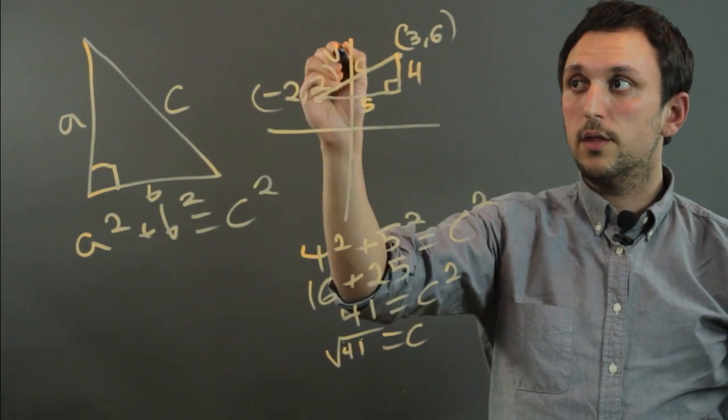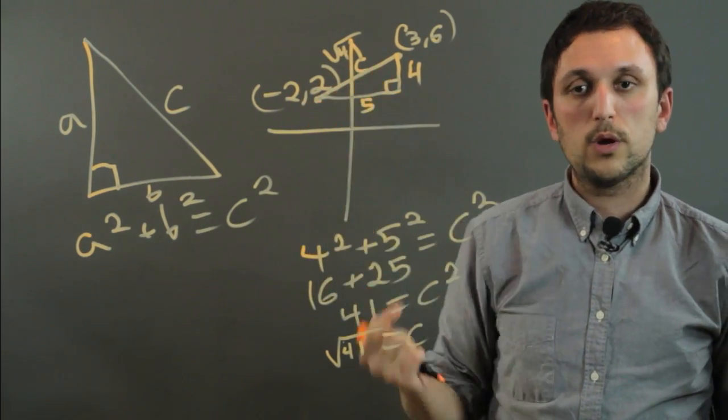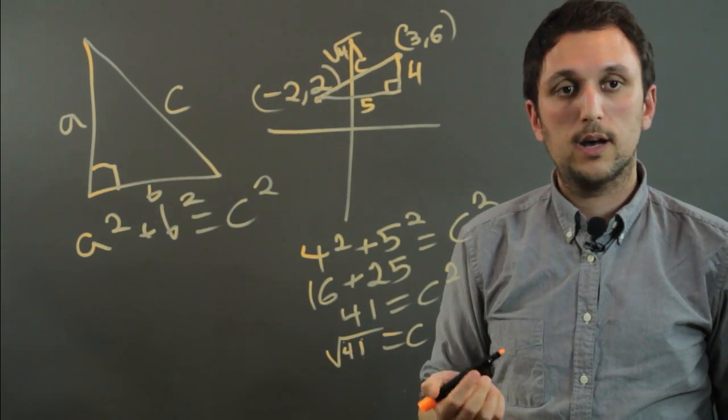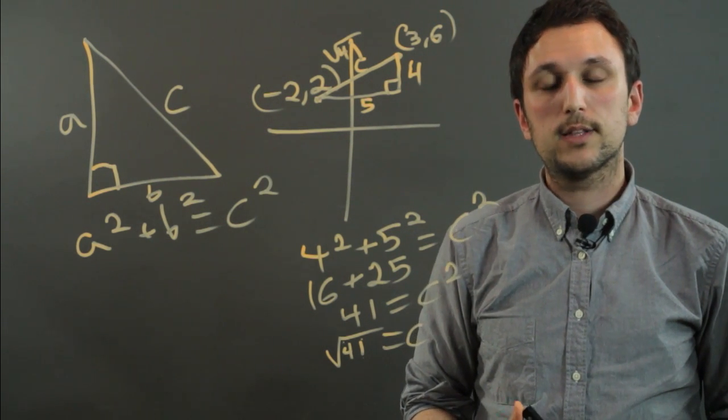So we would then know that the length of this diagonal, or the distance between these two points, is the square root of 41, which is roughly 6.5. So I'm Charlie Kasov, and you just learned how to use the Pythagorean theorem. Thanks a lot.